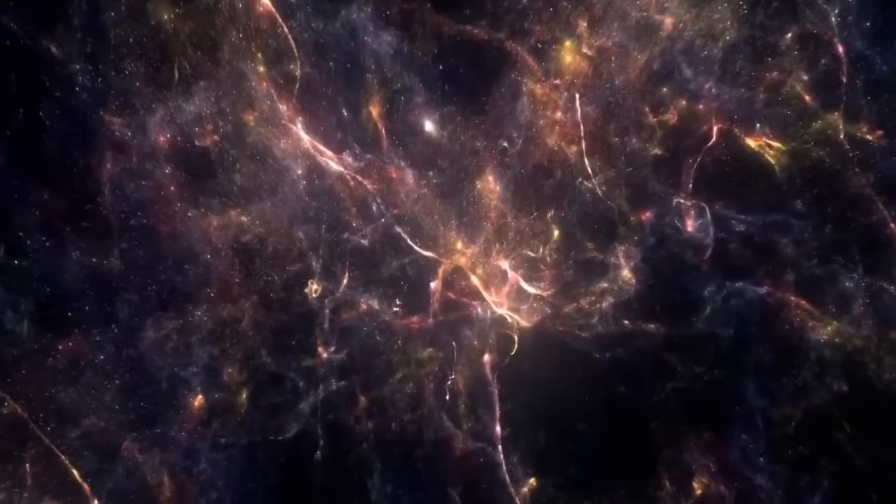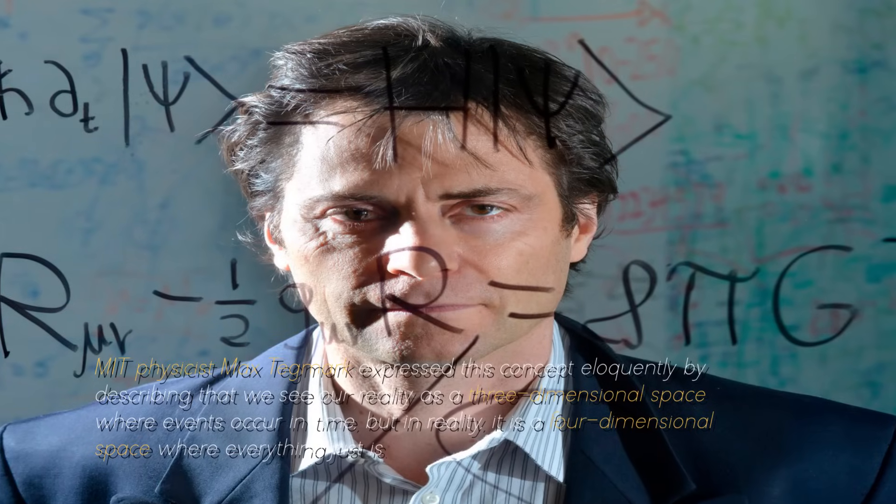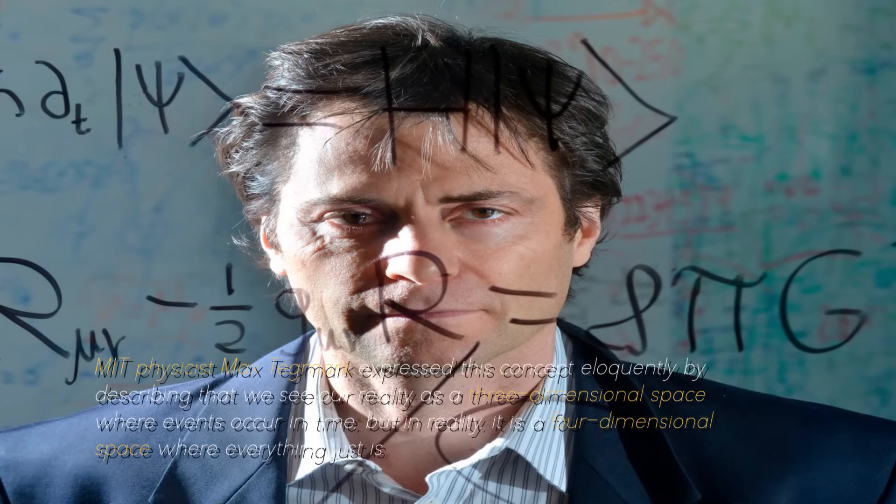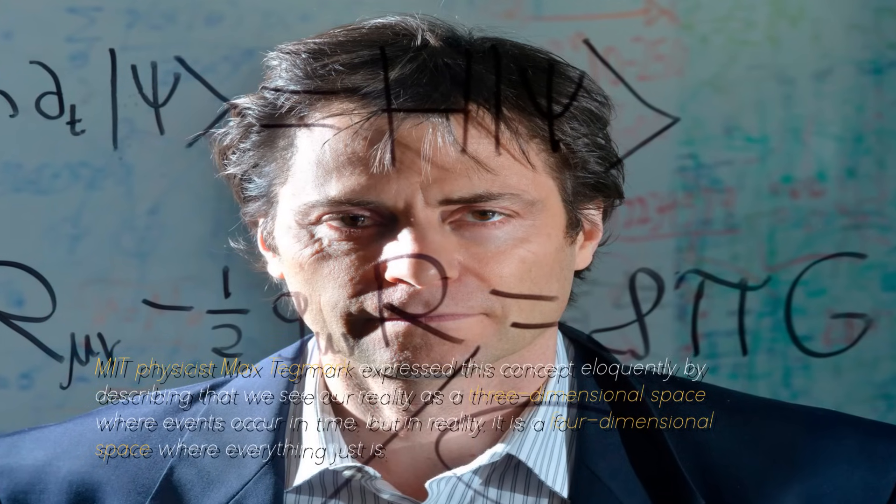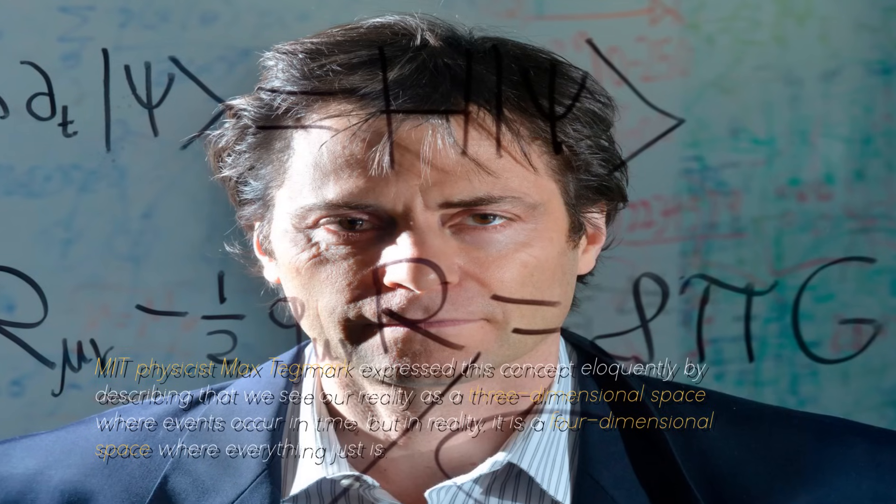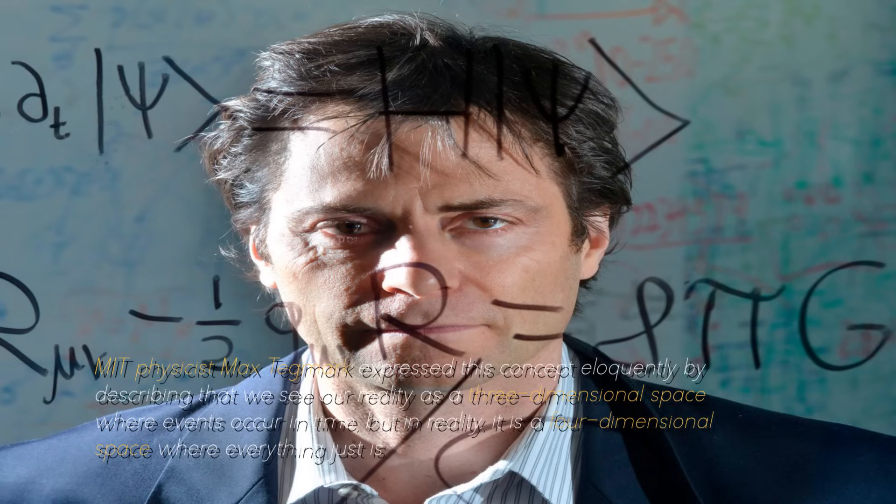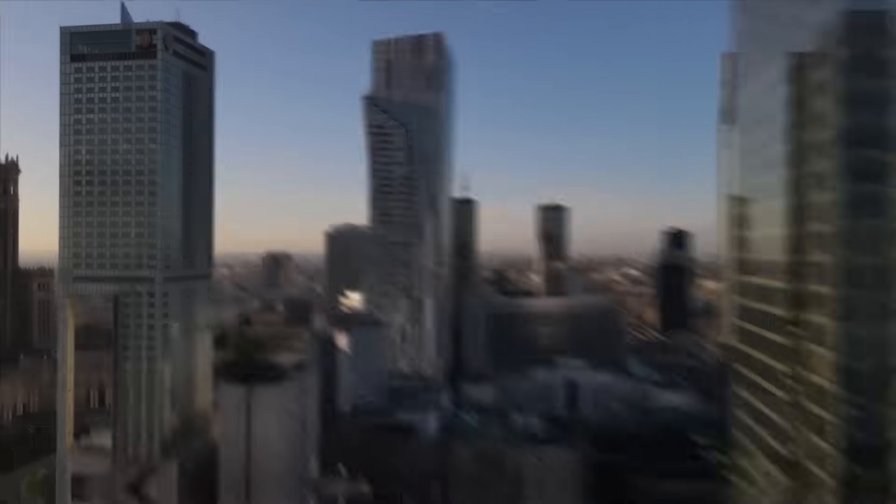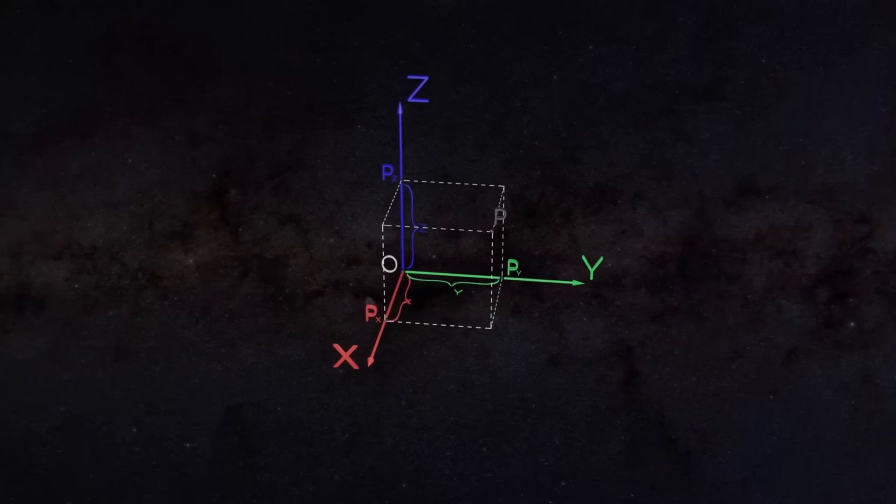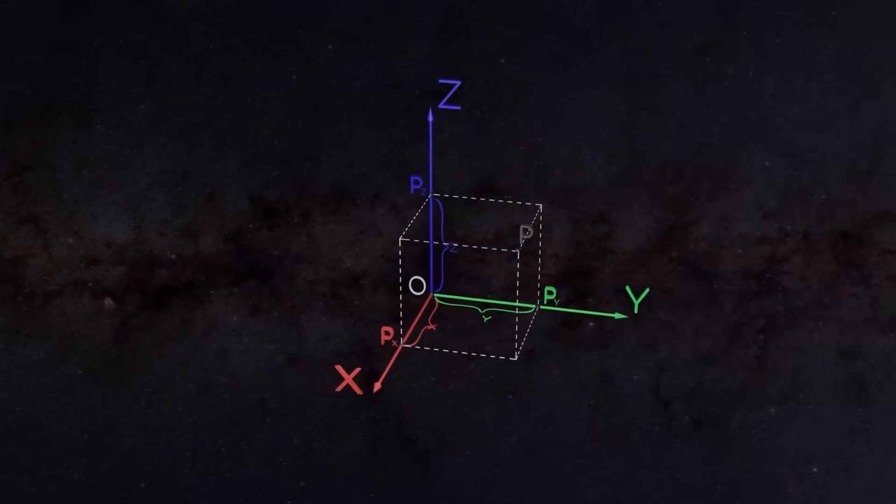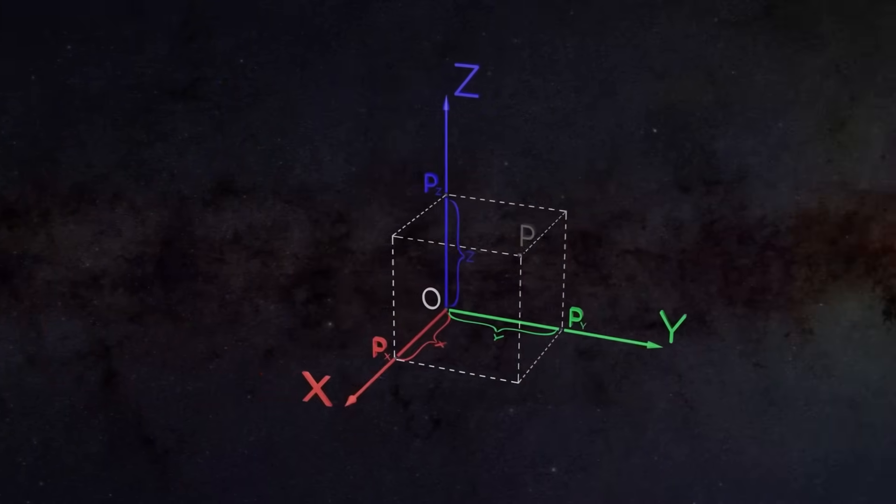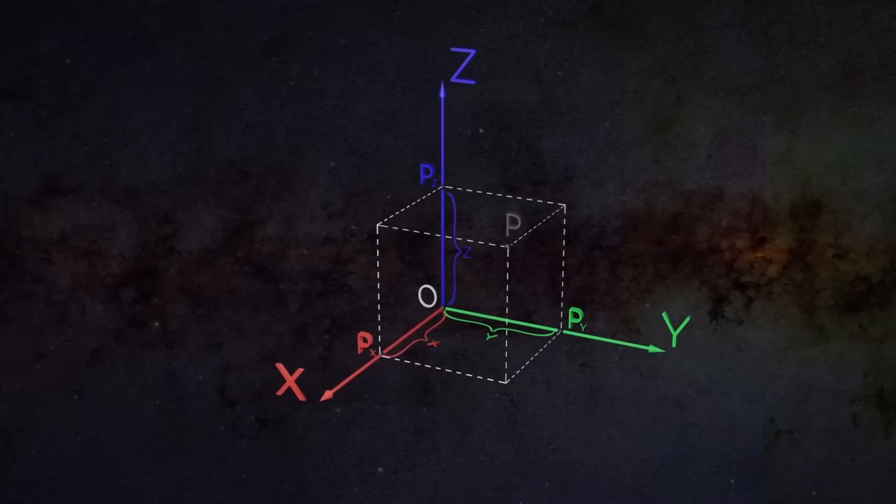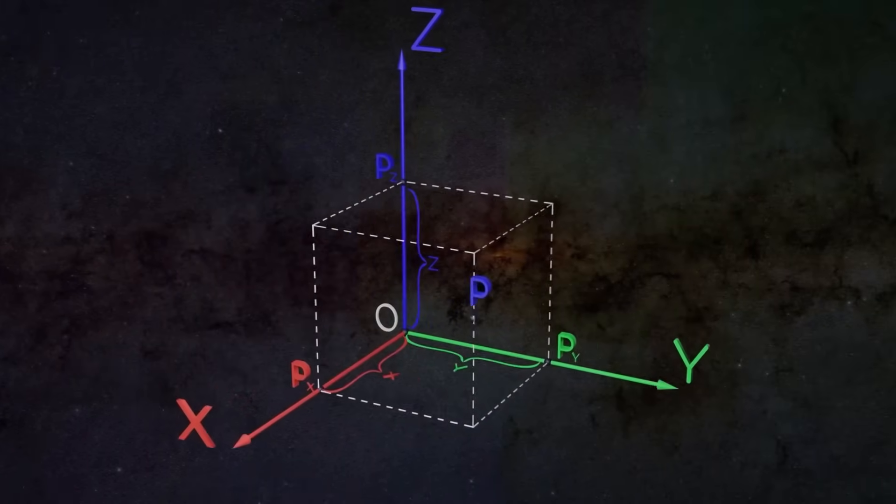The past and the future exist somehow somewhere in space-time. MIT physicist Max Tegmark expressed this concept eloquently by describing that we see our reality as a three-dimensional space where events occur in time, but in reality it is a four-dimensional space where everything just is. If this approach were true, then time would be revealed as an illusion. Since nothing would undergo real change, past, present, and future would coexist constantly. Certainly, these ideas are profound and challenging, but they are fascinating upon reflection, as they illustrate how magical and enigmatic the universe can be.